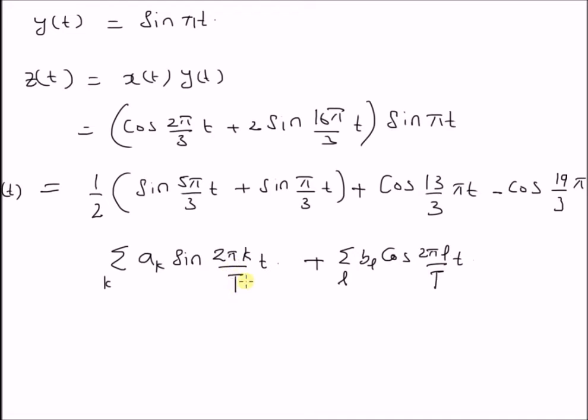Now, we have to determine the value of the period capital T, the fundamental period capital T. We can simply determine those values by comparing the frequencies or the arguments of the sinusoids. For the first one, we can clearly see that 5π/3 corresponds to 2π·5/6. That means T is equal to 6.